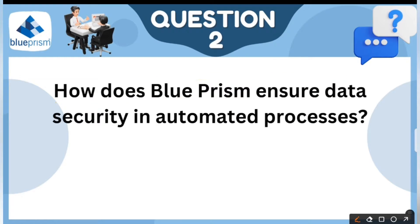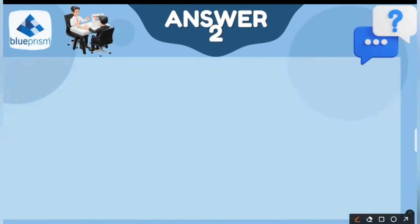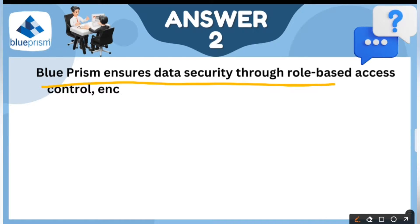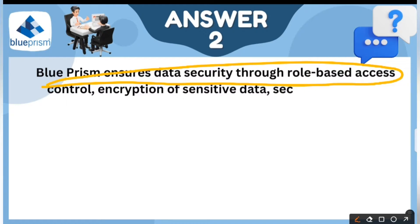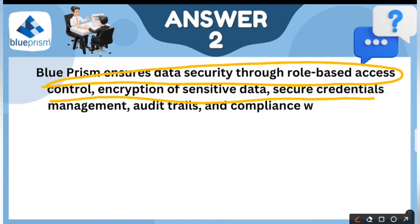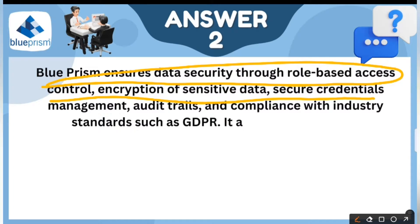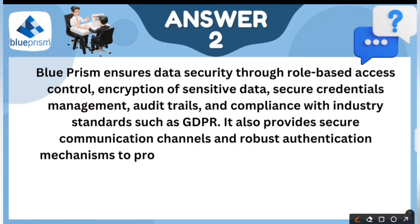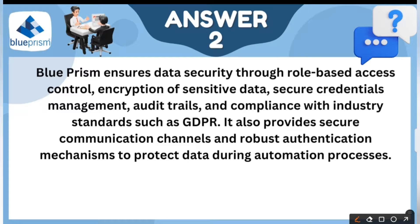How does Blue Prism ensure data security? Blue Prism ensures data security through role-based access — we can create different roles for developers, different roles for controllers, and so on. There are also other features like queue management where we can save our data securely.